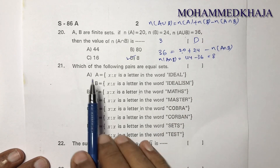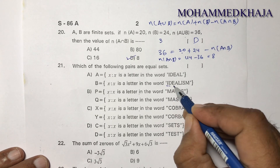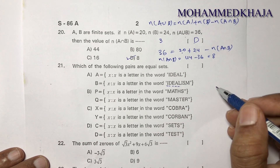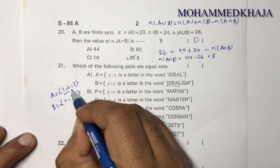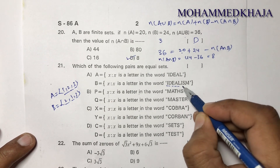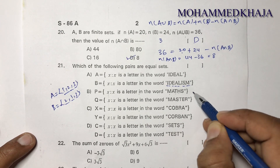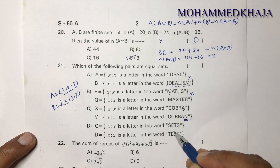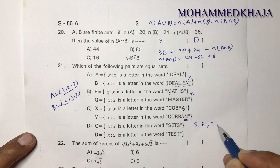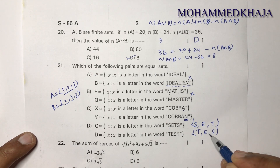Next question: Which of the following pairs are equal sets? Equal sets must have exactly the same elements. Checking options with letters like IDEAL and MATHS — options with extra letters like an extra N, or different letters like S and M, are eliminated. Writing SET as a set gives {S, E, T} — elements match in one option, so the correct option is D.